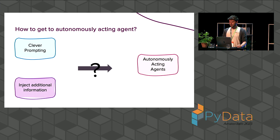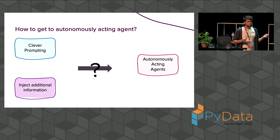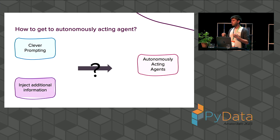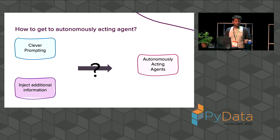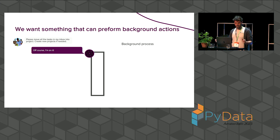But how do we actually get to an autonomous agent? Right now it's just giving me an answer about how to see groupings. But I want it to do more — like create a new project, move a task from my inbox to that project, and other clever stuff. For example, if I ask it to please move all my tasks in my inbox into projects and create a new project if it doesn't exist yet...